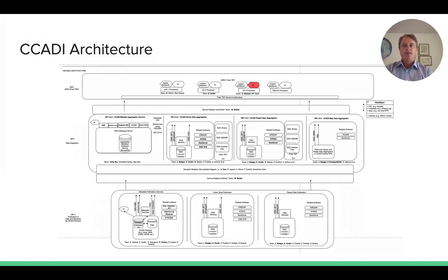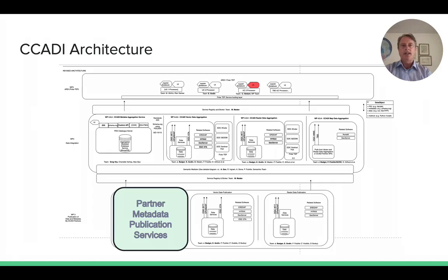From a technical perspective, this is a diagram of the CCADI architecture. It is a multi-tier architecture. The base layer is where partners are engaging primarily and publishing metadata, where a number of the different partners have polar data catalogues — some focused on Arctic, some on Arctic and Antarctic — and we're providing resources through our funding to ensure they can share that metadata in standardized, interoperable ways.